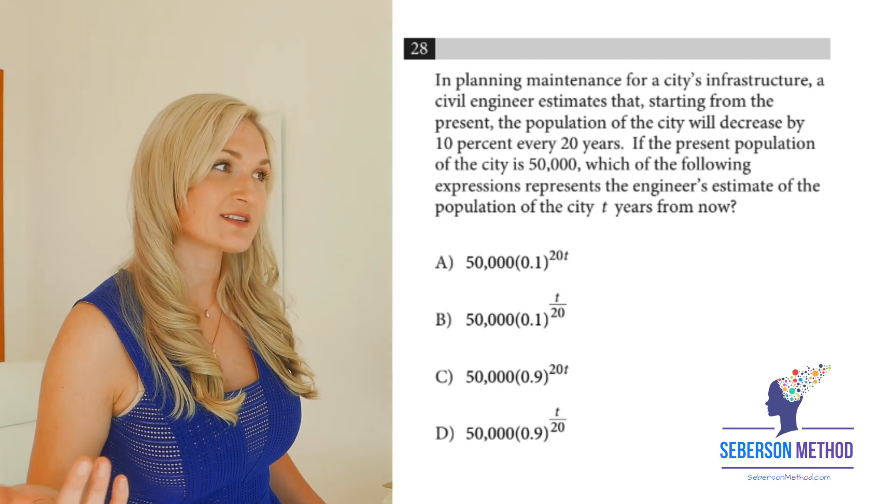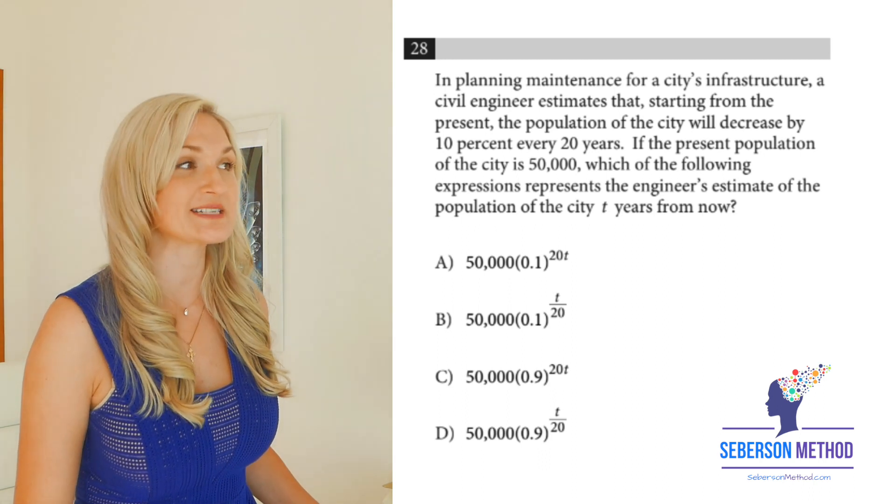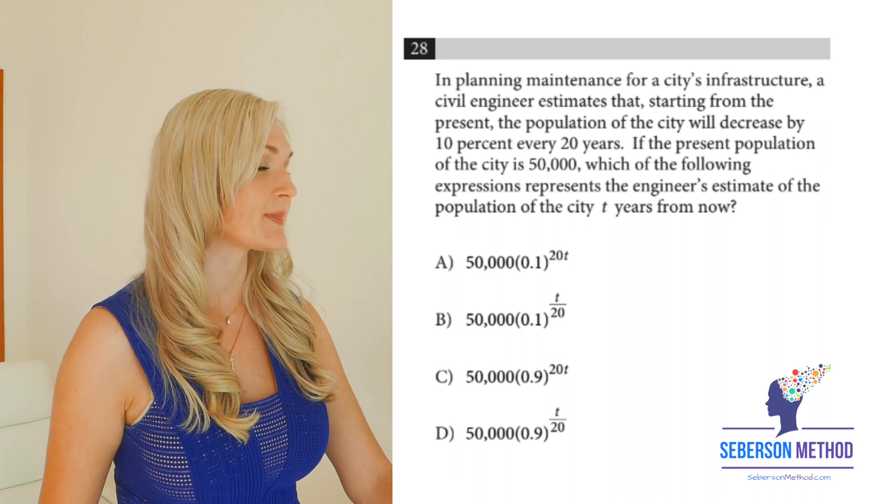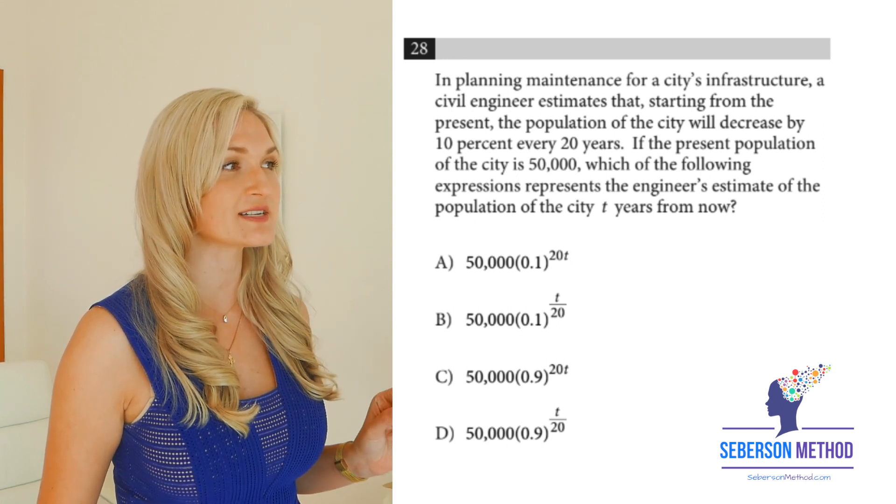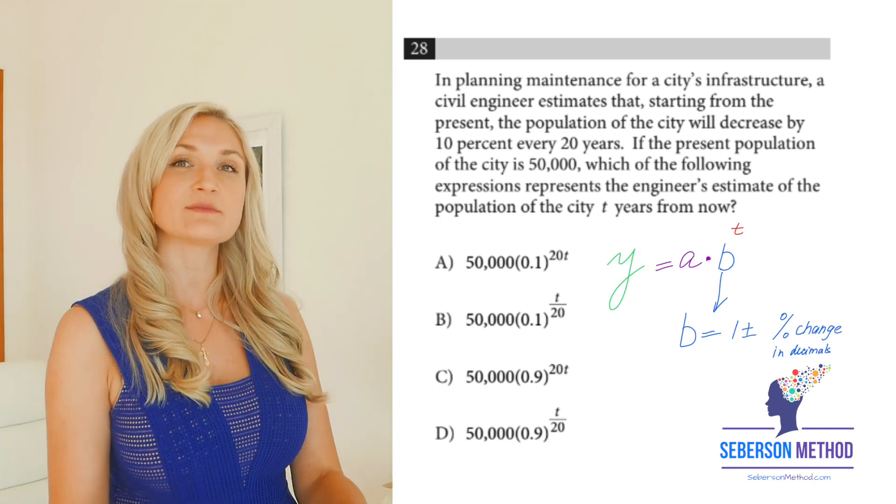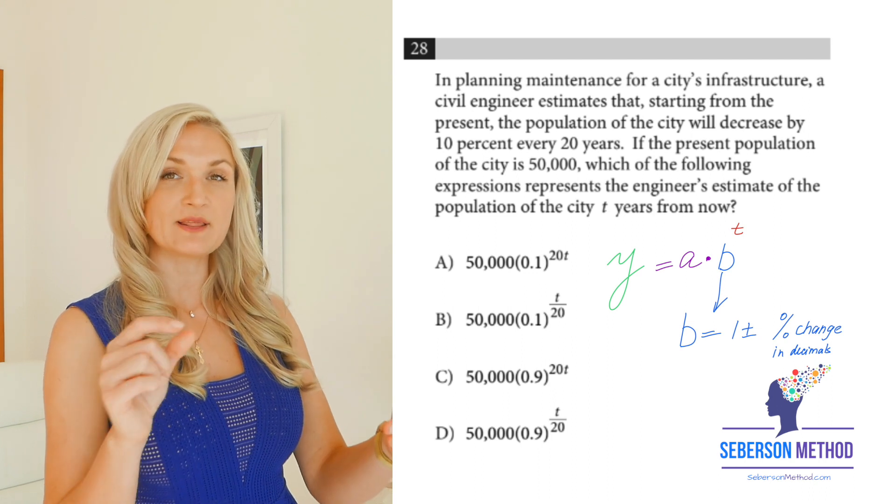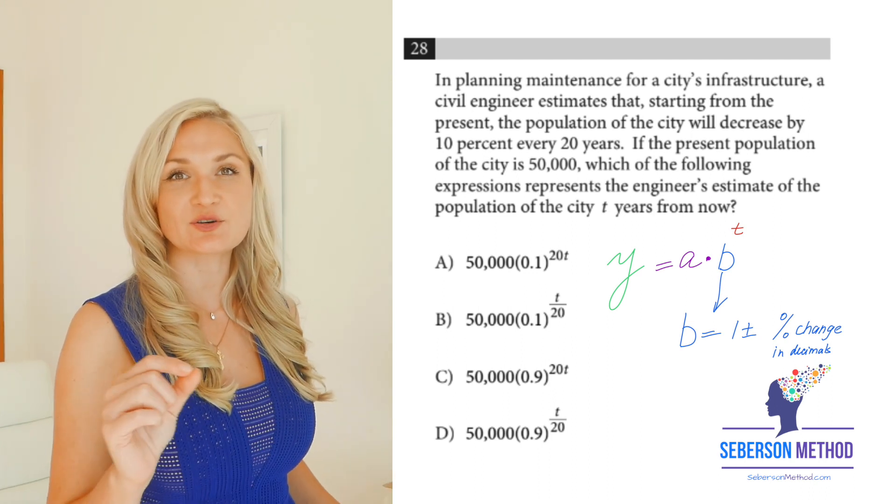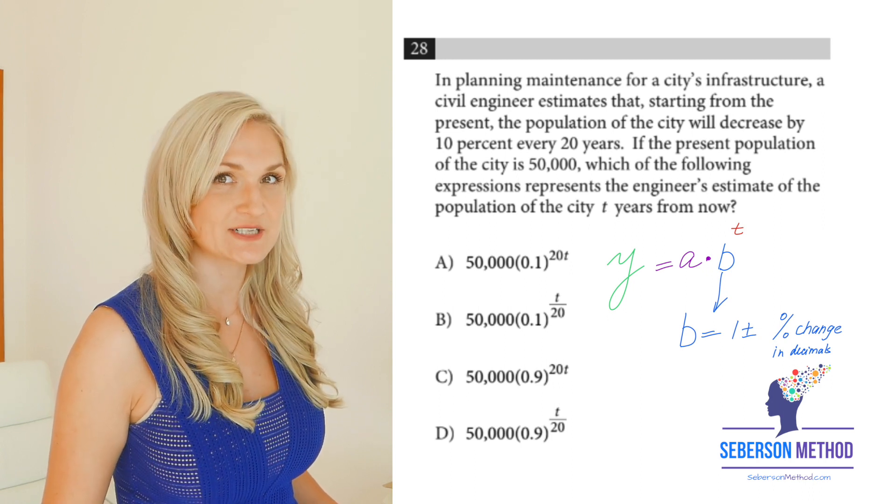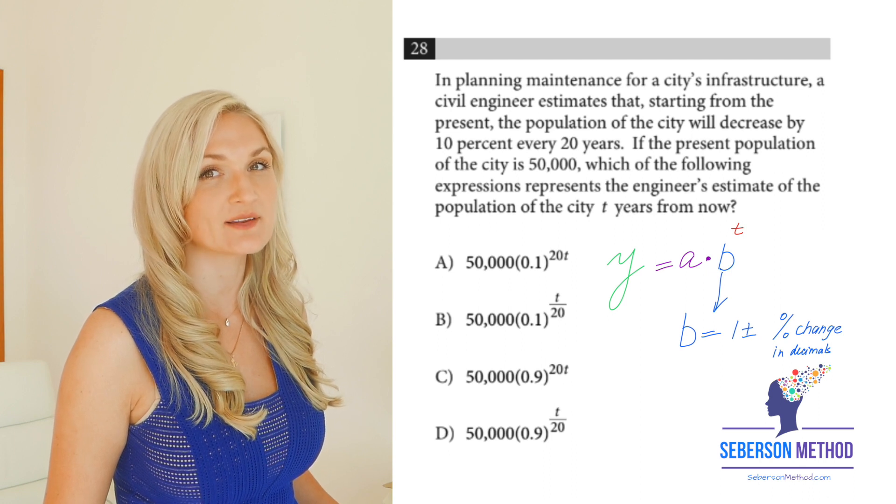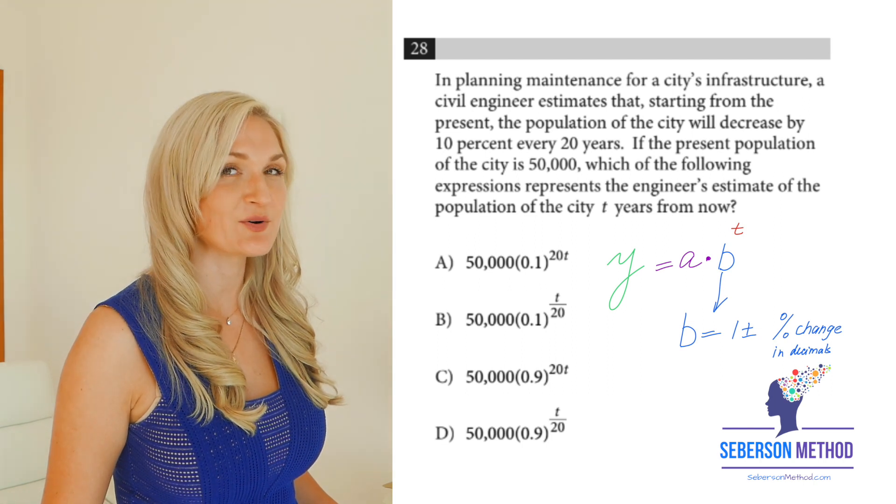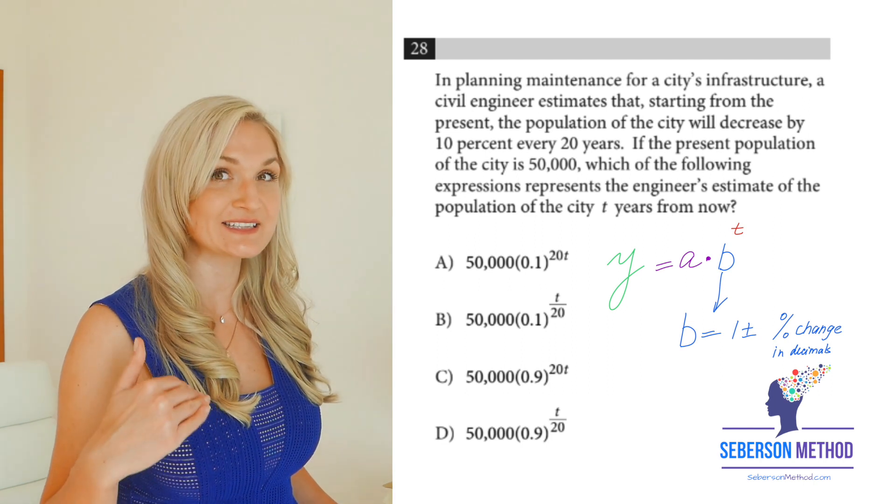So here, looking at the answer choices, your initial amount is going to remain the same. It's going to be 50,000. And that initial amount represents the population. Now, the rate. What is going to be your rate? Is it going to be 0.1 or 0.9? Your rate comes from 1 plus or minus percent change in decimals. So what is our percent change here? 10%. What's 10% in decimals? 0.1. So your B is going to be 0.9, not 0.1. So that eliminates immediately A and B.